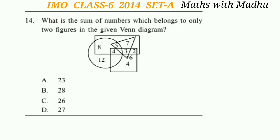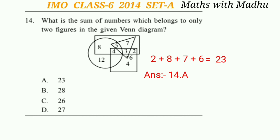Question 14: What is the sum of numbers which belong to only two figures in the given Venn diagram? Looking at the Venn diagram, the numbers that belong to only two figures are 2, 8, 7 and 6. Their sum is option A, which is 23.